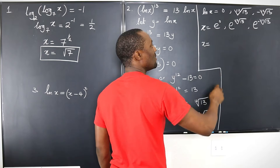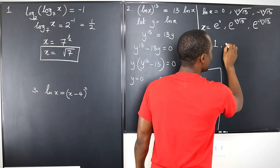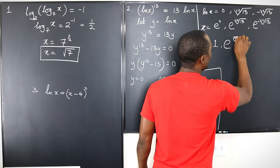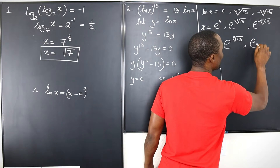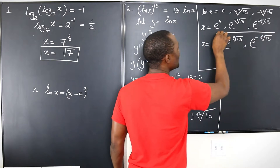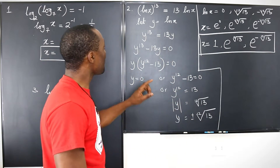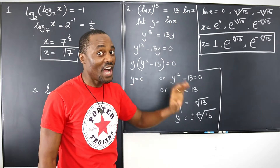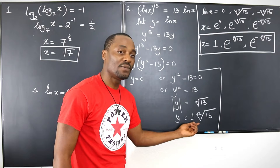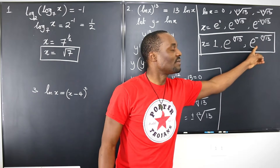So x equals — what is e to the zero? Anything to zero is 1. And the other two will be e to the (13)^(1/12) and e to the negative (13)^(1/12). Those are the three answers. You would not get three answers if, at the beginning, you took out one of the ln(x)'s. And if you didn't recognize that taking an even root requires plus or minus, you would have gotten just one answer and missed the points for the other two.